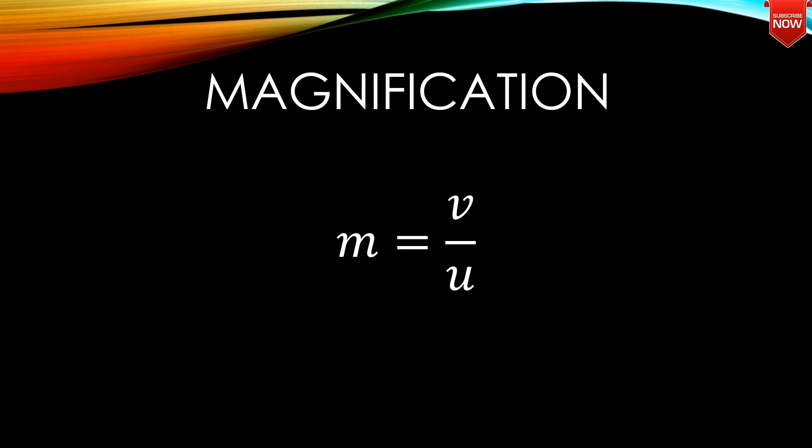Magnification is the height of the image divided by the height of the object, which is equal to V divided by U. V is the distance between lens and image, U is the distance between lens and object.